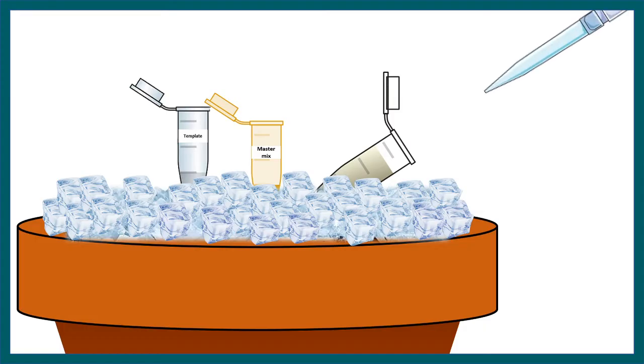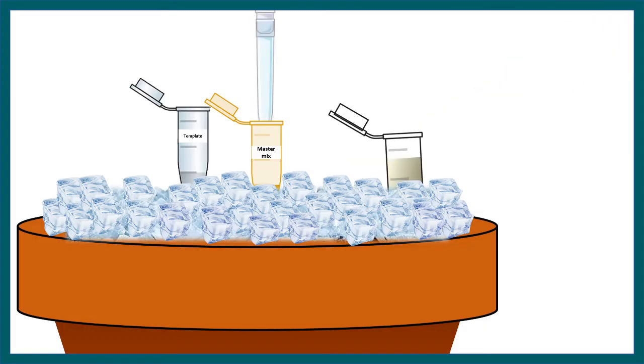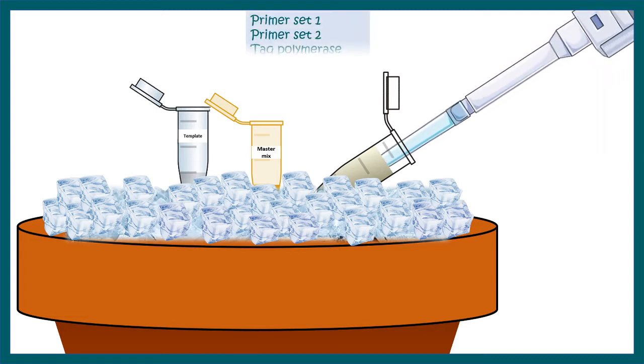We'll take the template, put it in a PCR tube, then we'll take the master mix and put it in this PCR tube. This master mix generally has primer pairs, forward and reverse primer pairs, then Taq polymerase, dNTPs, buffer and MgCl2.